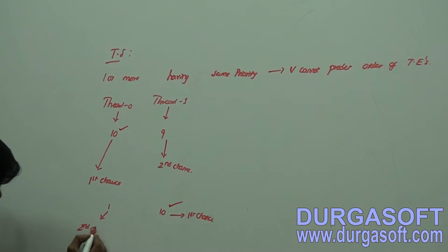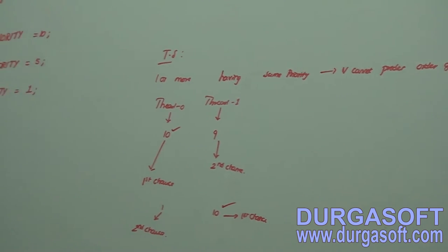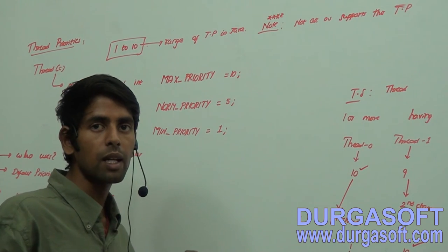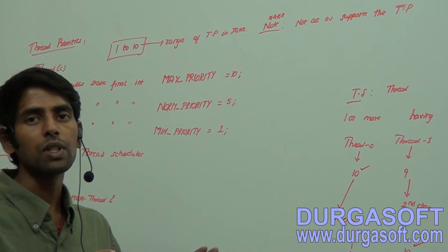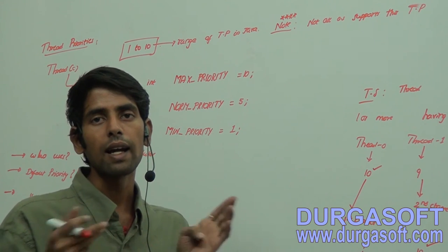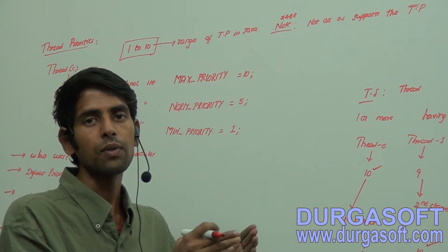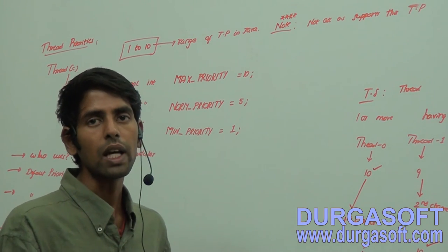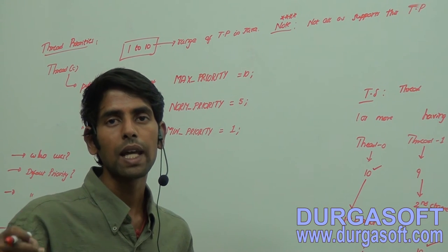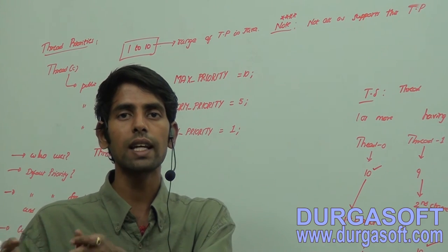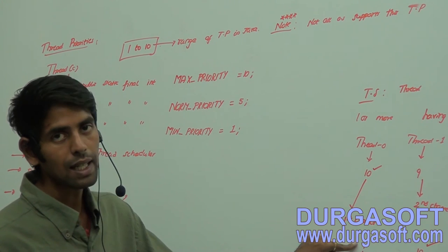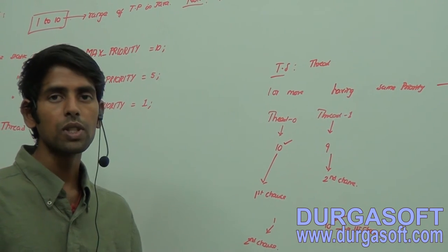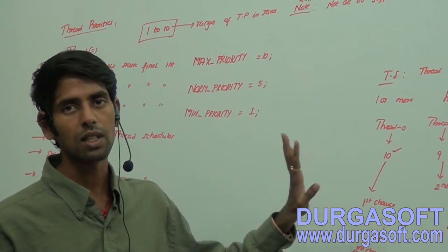So who uses thread priorities? Our thread scheduler uses thread priorities in order to execute threads. If one or more threads have the same priority, we cannot predict which thread executes first. If thread zero has higher priority than thread one, like 10 and 9, the thread with the higher numeric value - thread zero with 10 - gets the first chance for execution. Thread one with priority 9 gets the second chance. We discussed all three possible scenarios.